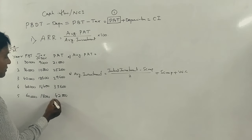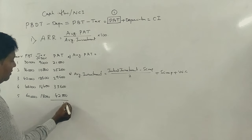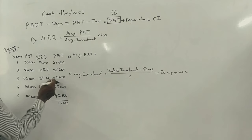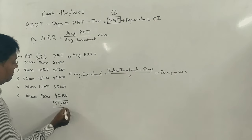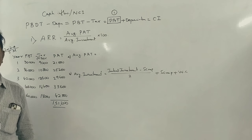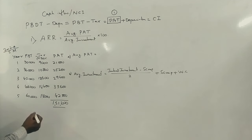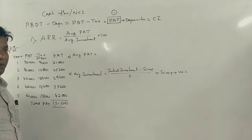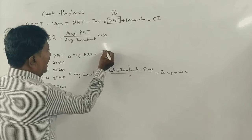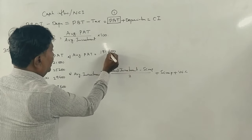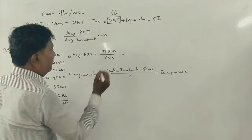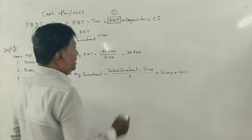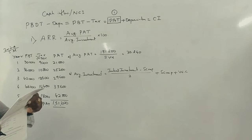Total profit after tax = 1,51,200. Average profit after tax = 1,51,200 ÷ 5 years = 30,240.